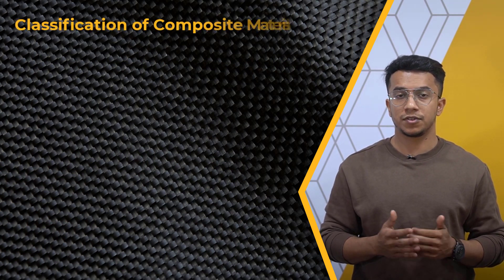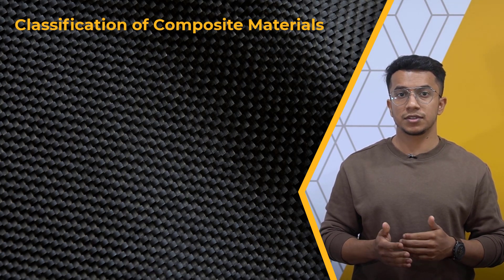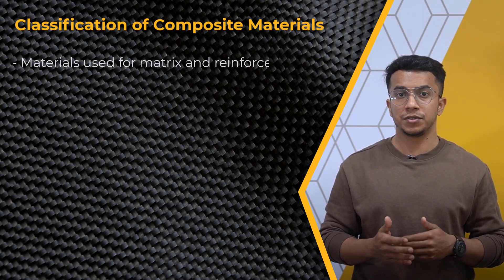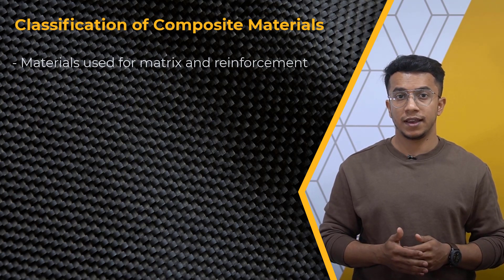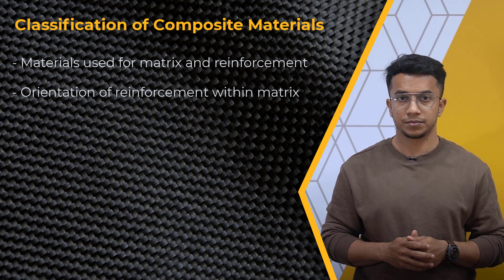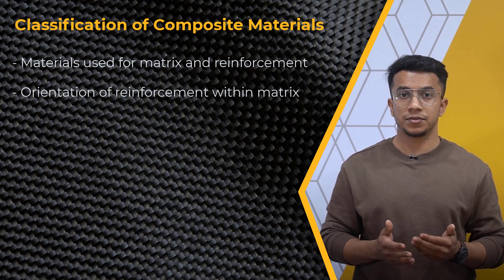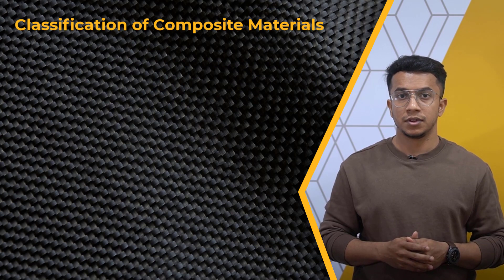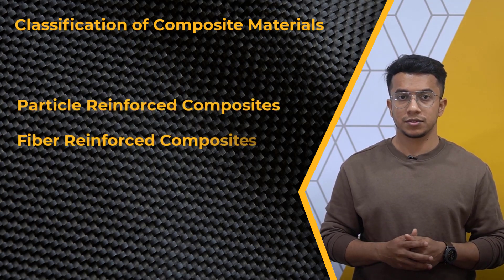Now that we have clarified some of the terminology, let's look at the classification of composites. Composite materials can be categorized based on the materials used for the matrix and the reinforcements, as well as the orientation of the reinforcements inside the matrix. Based on this, composites are broadly classified into two types: particle reinforced composites and fiber reinforced composites.